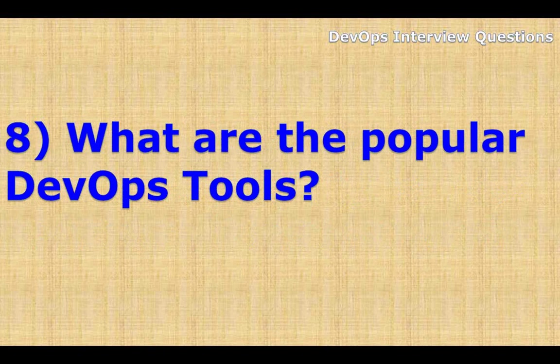Next: what are the popular DevOps tools? Popular DevOps tools are: Git, a version control system tool; Jenkins, a continuous integration tool; Selenium, a continuous testing tool; and Puppet and Chef, configuration management tools.